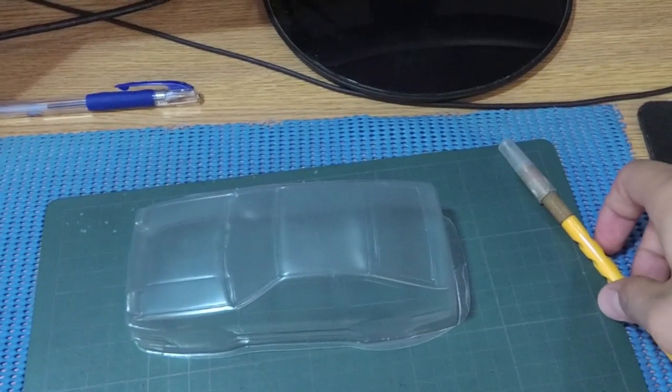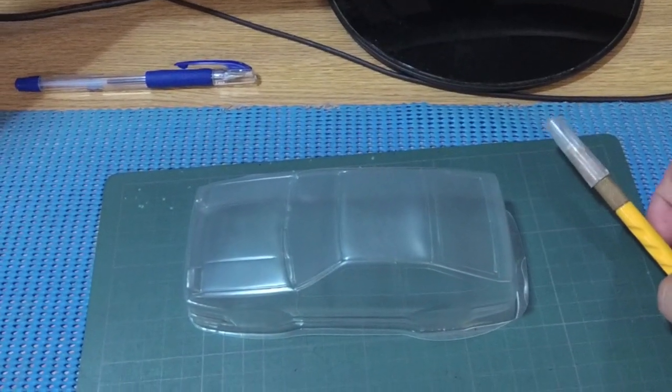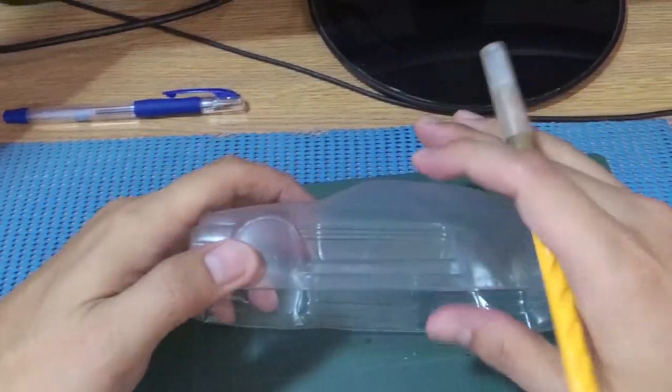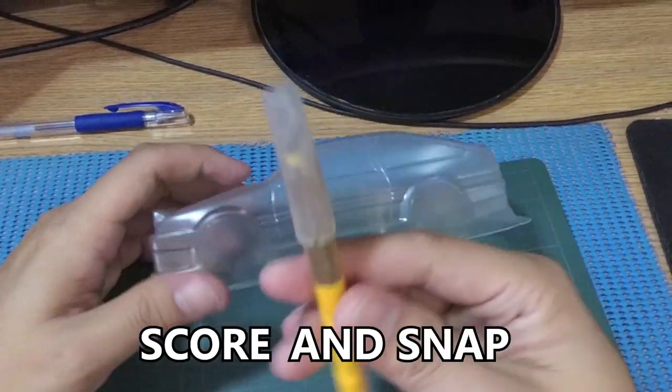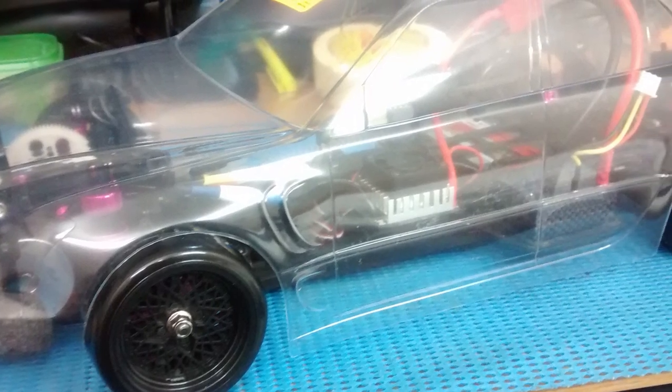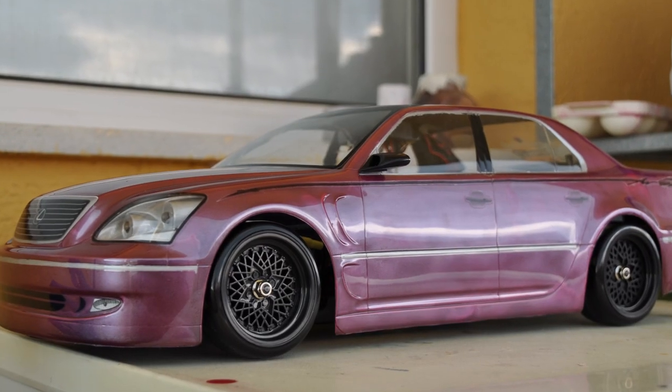The other way to cut or trim the body is by using an art knife or an exacto knife. This method is usually called score and snap. And just look at the result of my first attempt. Very clean isn't it?